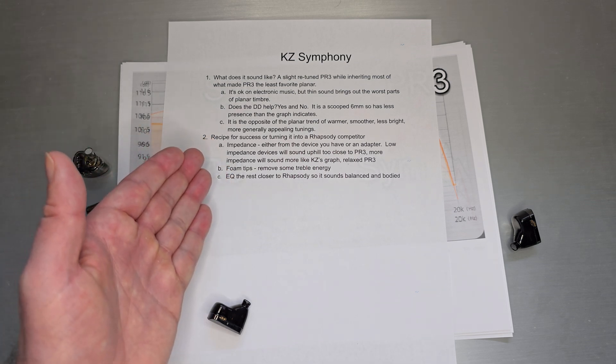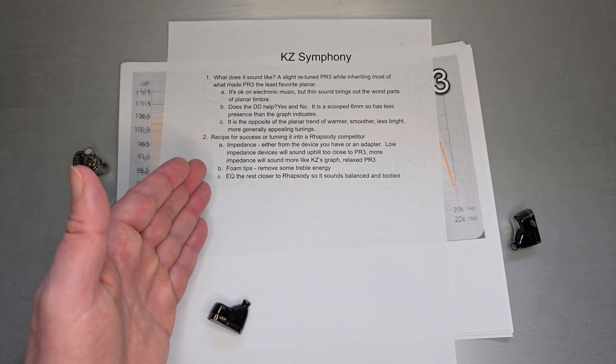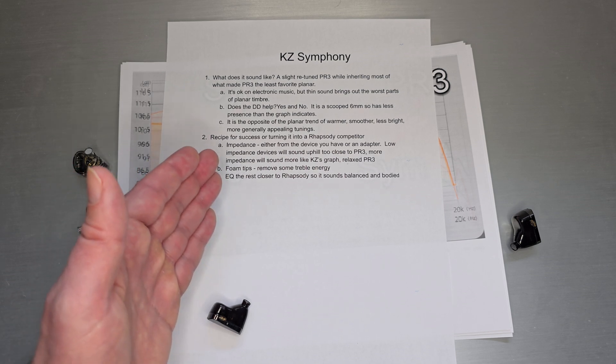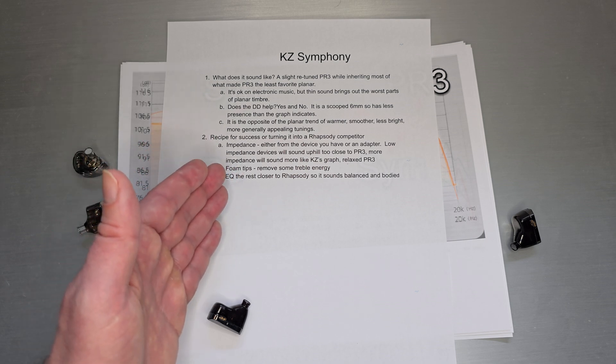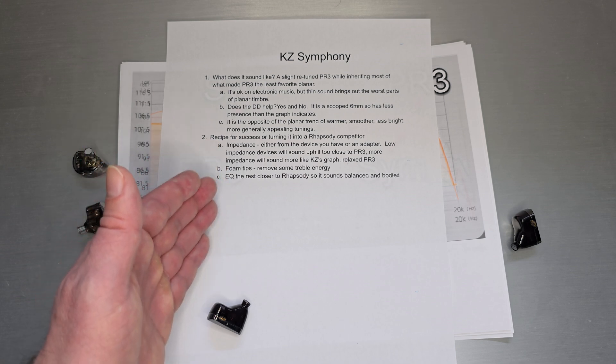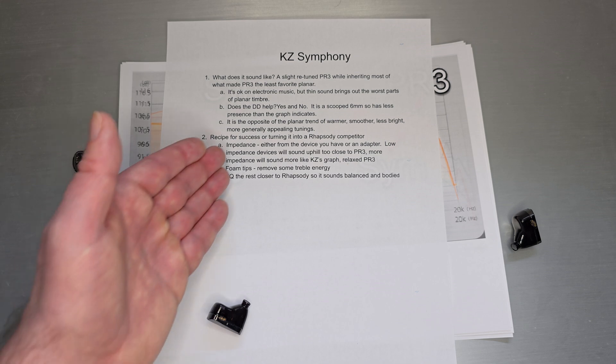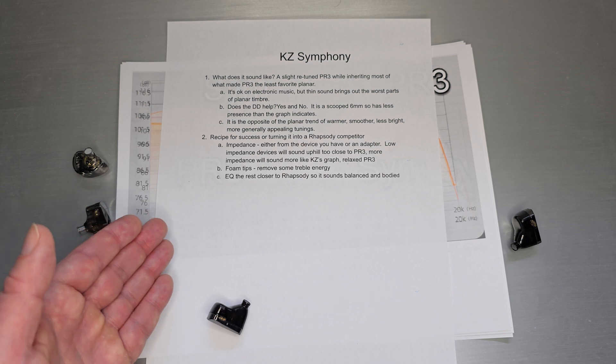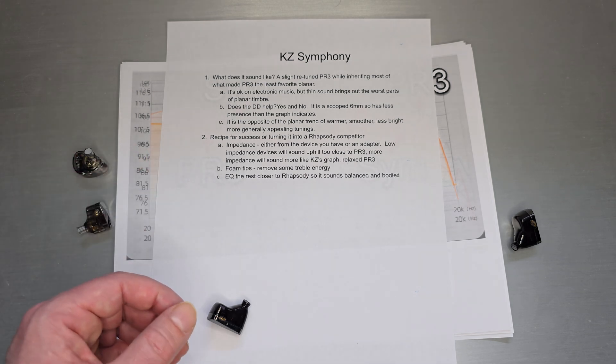And I will also say, the tuning-wise, it's probably the opposite of what we've seen recently as far as planers go. The MP145, Melody, Klanar, Sivga, you know, I think all those sets, S15 especially, all the recent planer sets tended to move into this direction of being warmer and smoother, less bright, less planer timbre, you know, moving more towards general appealing tunings. And KZ almost followed the line from PR1 all the way through PR3 with the same style tuning. And that's, again, kind of what we get on Symphony. It hasn't really followed the trend that we've seen in other recent planer sets.